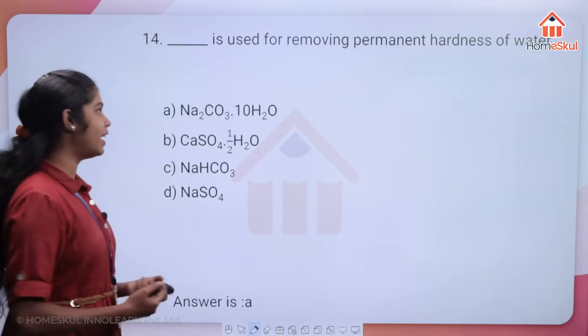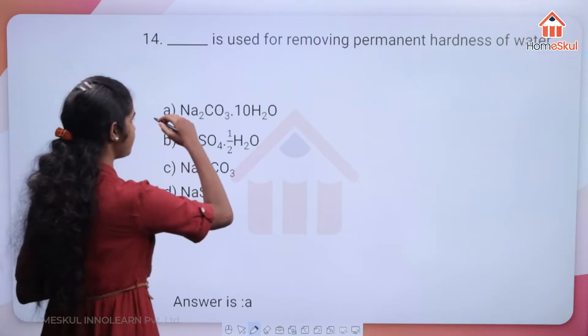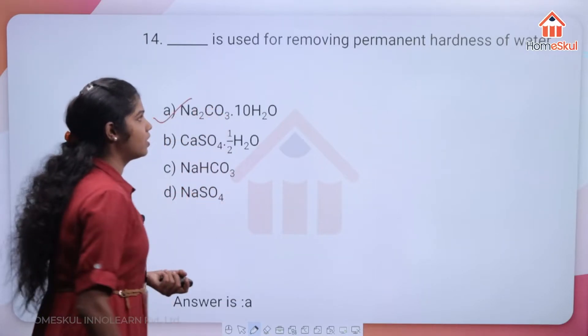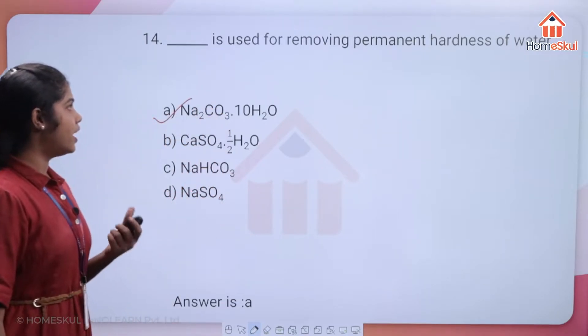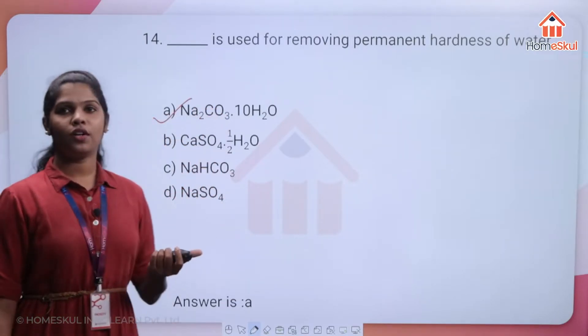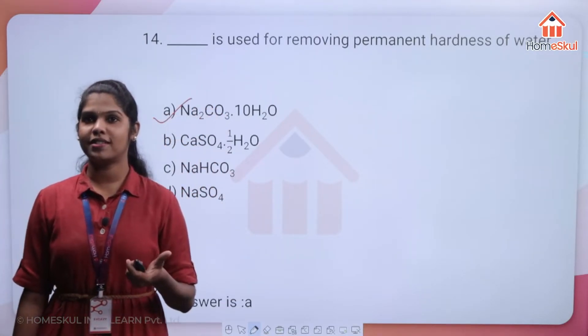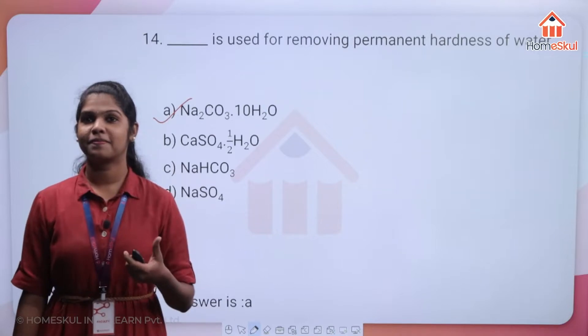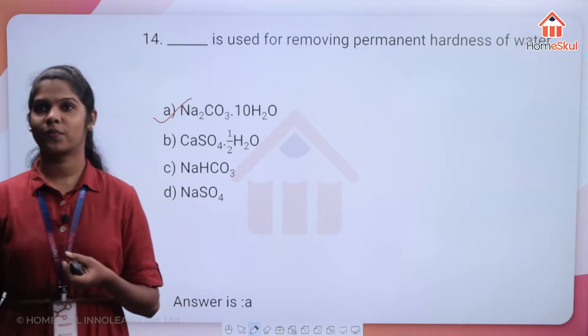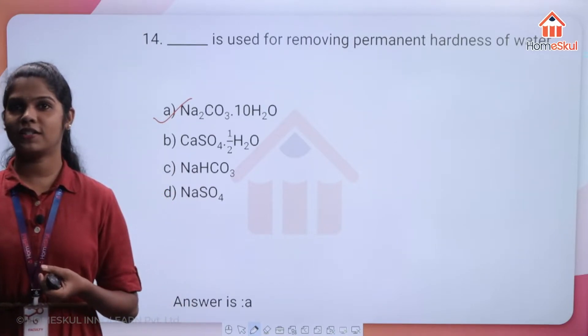The answer is option A — Na2CO3·10H2O, which is washing soda. Washing soda is used to remove permanent hardness of water.